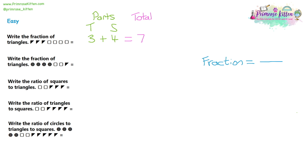The question is asking us to write the fraction of triangles. To write a fraction you need a numerator and a denominator. The denominator is the total, and the numerator is the part you're looking for. So we have three triangles over a total of seven — the answer is three out of seven. Three of the seven symbols are triangles.